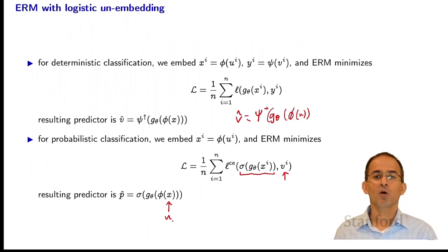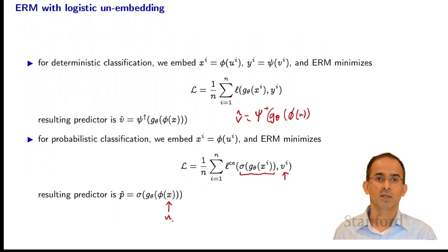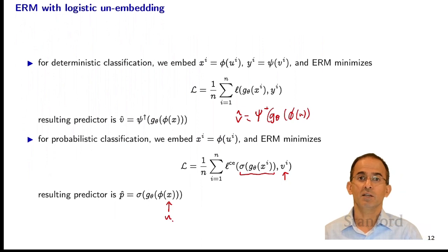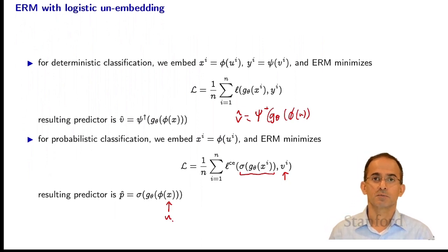The role of the unembedding here is a little different. The unembedding lives inside the loss function in probabilistic classification. Its role is to take the vectors that come out of our linear predictor g_theta and turn them into probability distributions.